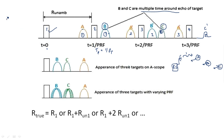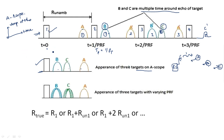When using an A-scope display — which shows time on the x-axis and amplitude of echo on the y-axis — the appearance of three targets is displayed. A is here, B is here, and C is here, all for one pulse. By seeing this waveform alone, we cannot identify which is the ambiguous target and which is the unambiguous target. If this is the only waveform given to the user sitting in front of the radar receiver, how can they identify which is ambiguous and which is unambiguous?